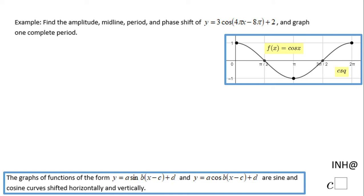Welcome back to I Need Help at C Square. In this example, we need to find the amplitude, midline, period, and phase shift of this trigonometric cosine function, and we also need to draw a complete period. We expect to get something like this since this is a cosine function, so let's start with the first part.